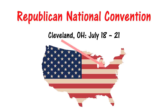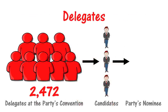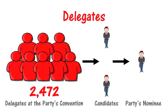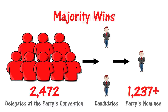There will be a total of 2,472 delegates at the convention who select the party's nominee for president. This person needs to win support from a majority of the delegates, which is at least 1,237 delegates.